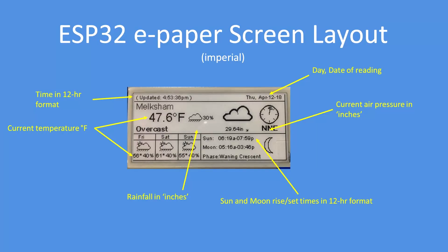So that was the metric display. The imperial display is the same except the US format of 12-hour time is used and the date is set to the US format. Temperatures are selected in degrees Fahrenheit. Cumulative rainfall is in inches when shown. Sun and moon rise and set times are in 12-hour format and the air pressure is in inches. So overall that's the only difference — all units are switched in what I call imperial mode.